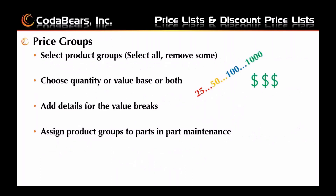Price groups can be set up in quote management or order management in the setup submenus. They can have any name you assign to them. You can choose any or all the product groups to add to your price group, and the groups you set up can be quantity based, value based, or both. Once you have the selections made, you will then need to add the details for the value breaks on the value breaks tab. Make sure that parts in the part maintenance screen have the product groups assigned to them to utilize the price groups.